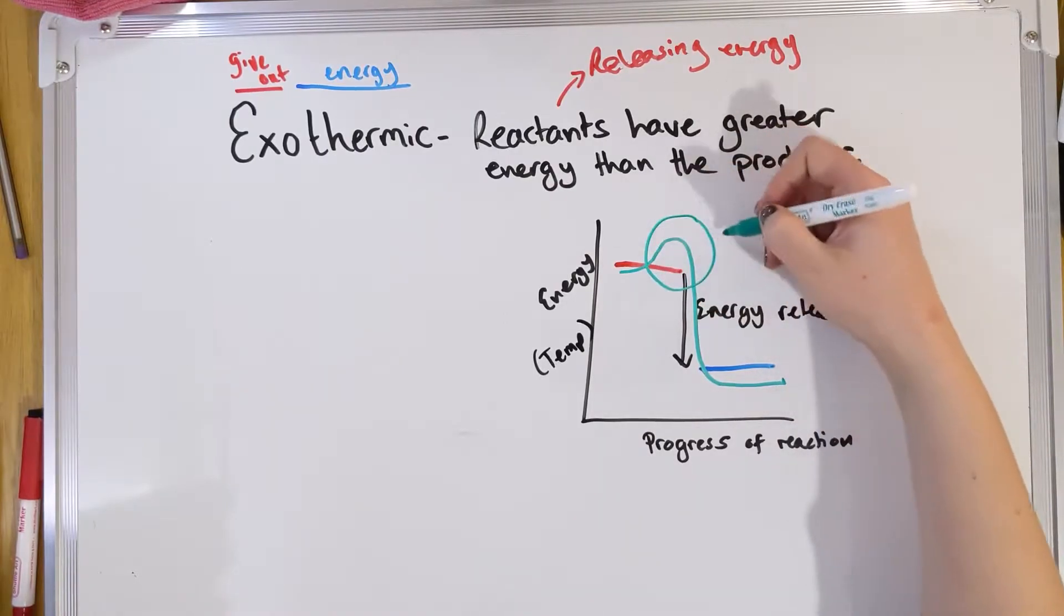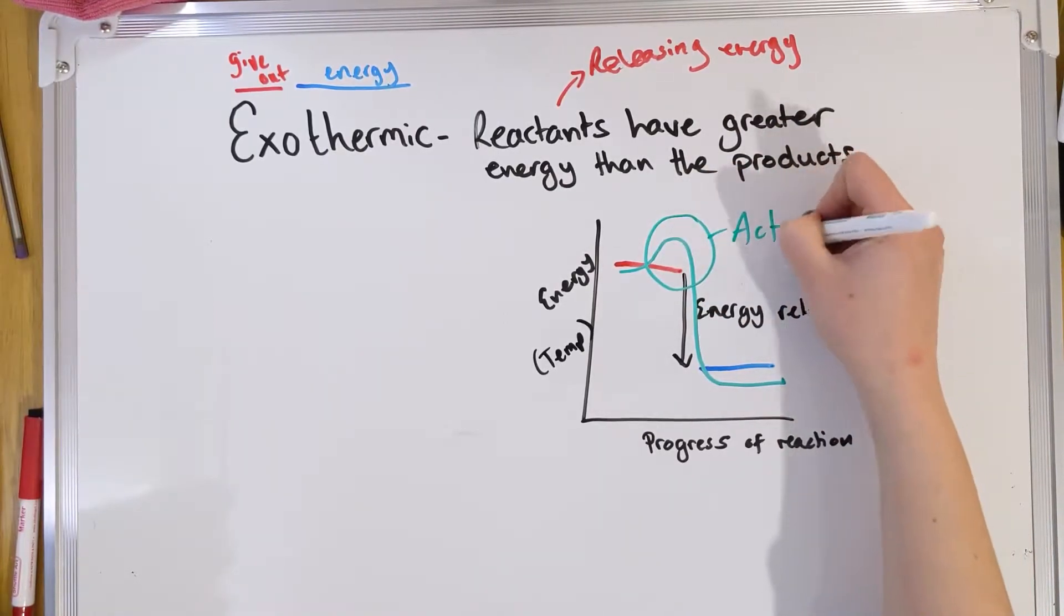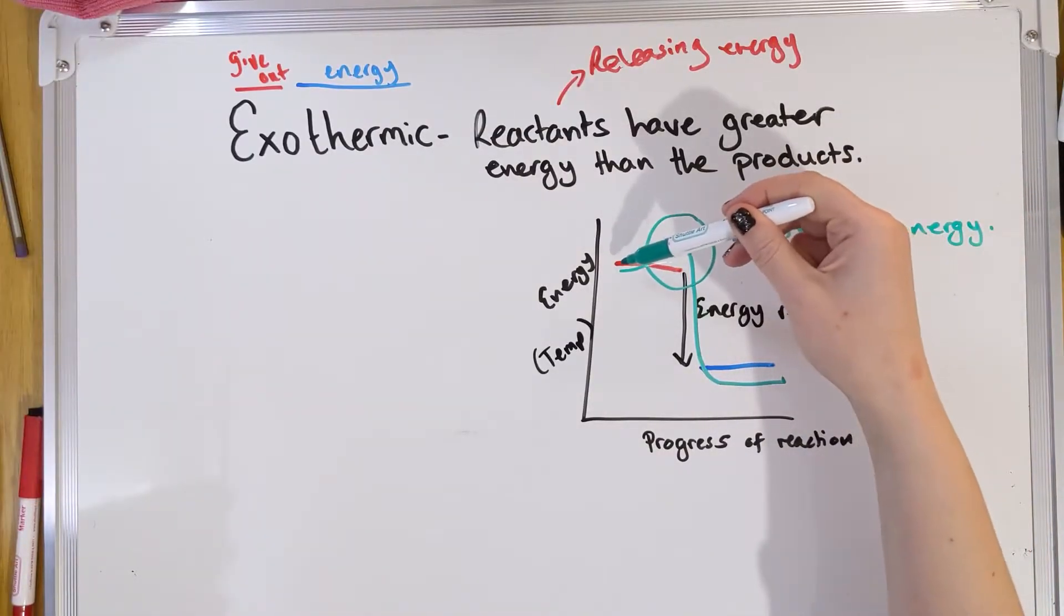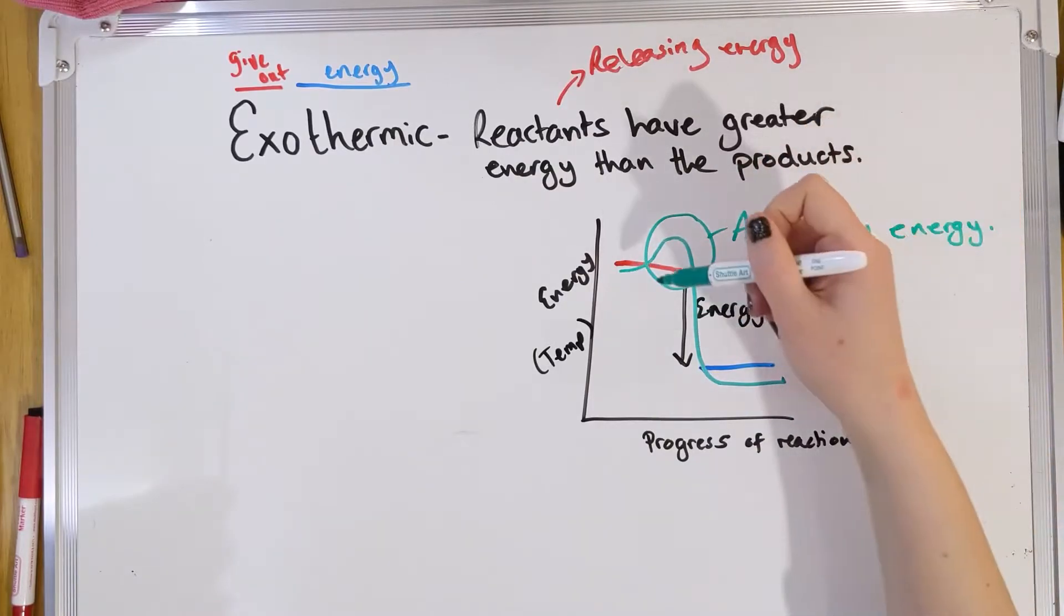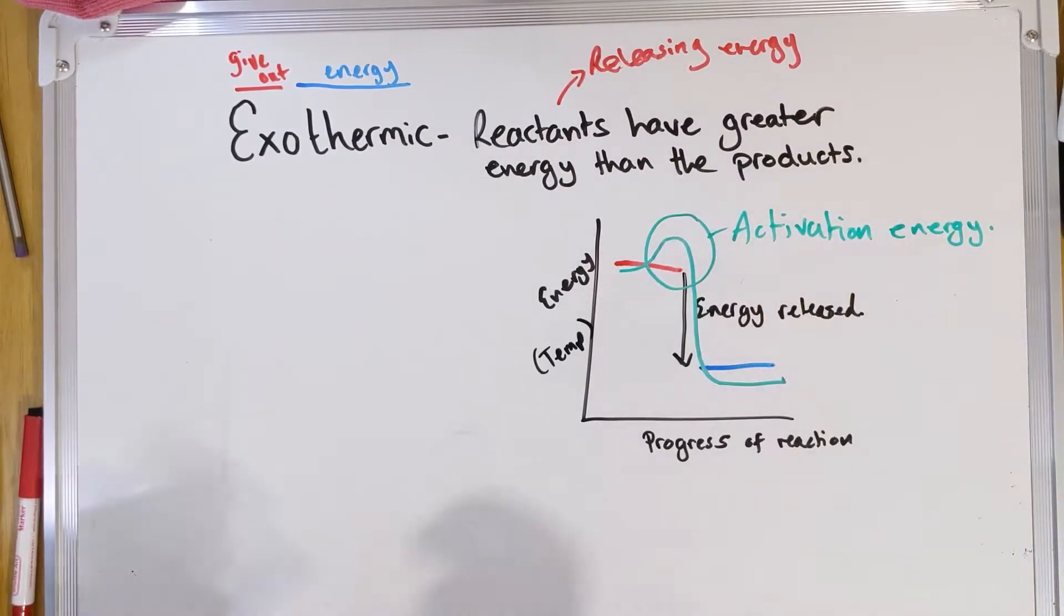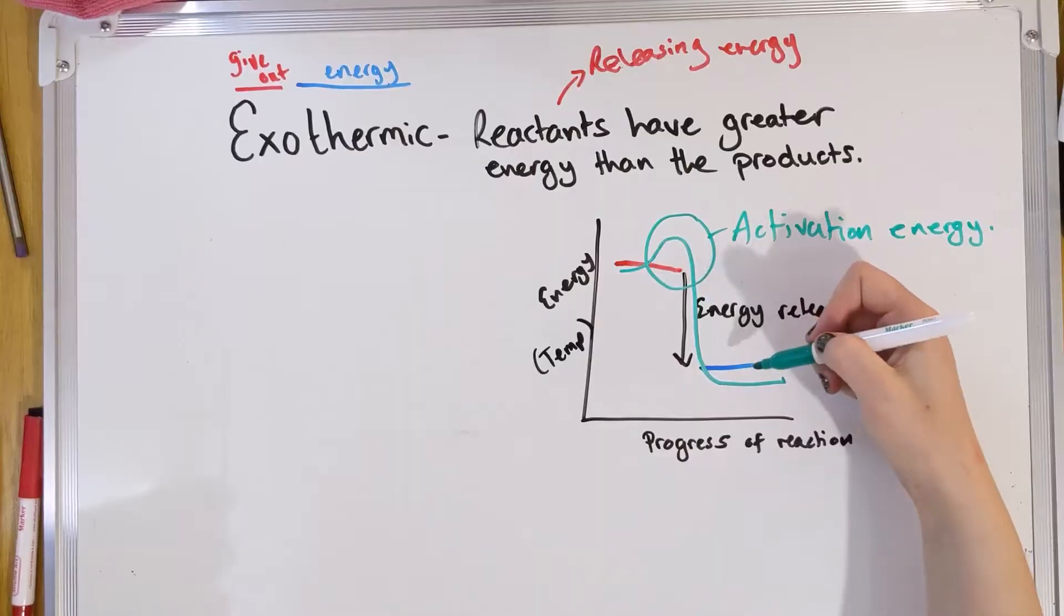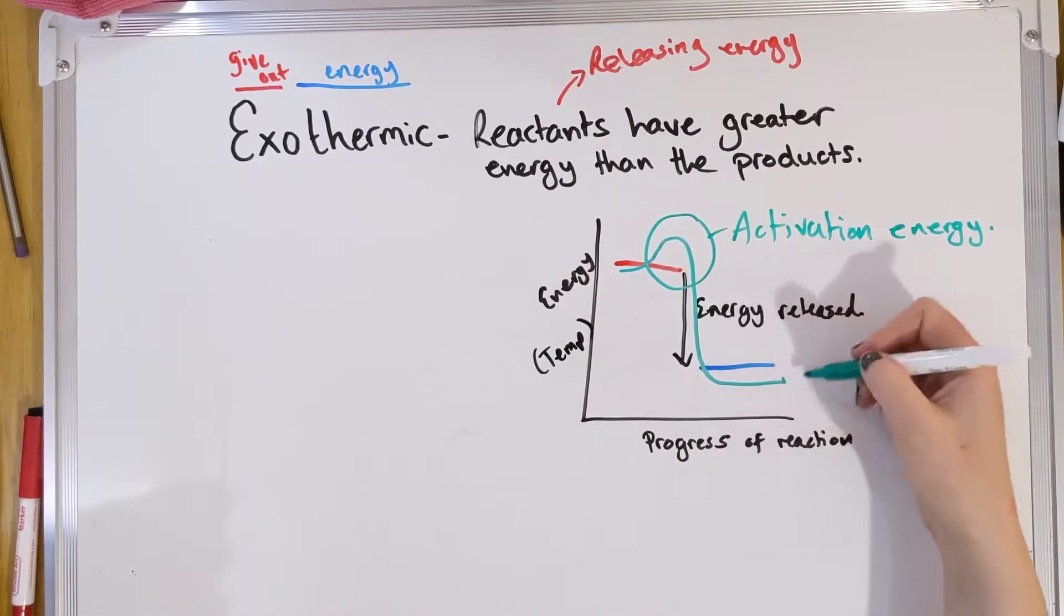The reason why you get this bump at the start is that's something called activation energy. At this tender age and this point in your scientific lives, you don't have to know exactly what activation energy is. But long and short of it, it's the energy needed for the chemical reaction to start. So even though the reactants take in a bit of energy to start with, that energy is what's needed to break those bonds. So break up the carbon and the oxygen out of carbon dioxide to form new products. But after you have that initial push to get that reaction going, the energy is going to go down because that energy is being released to break those bonds. So the products end up with a much lower energy.